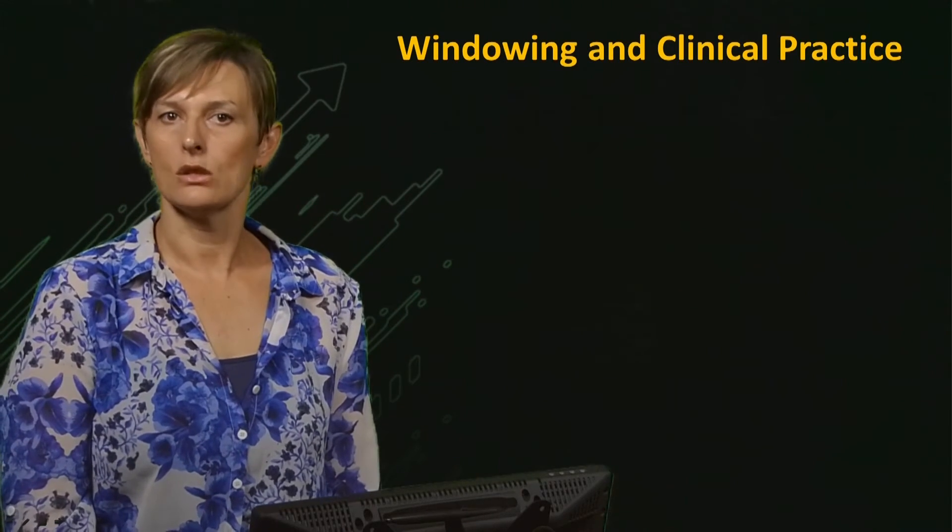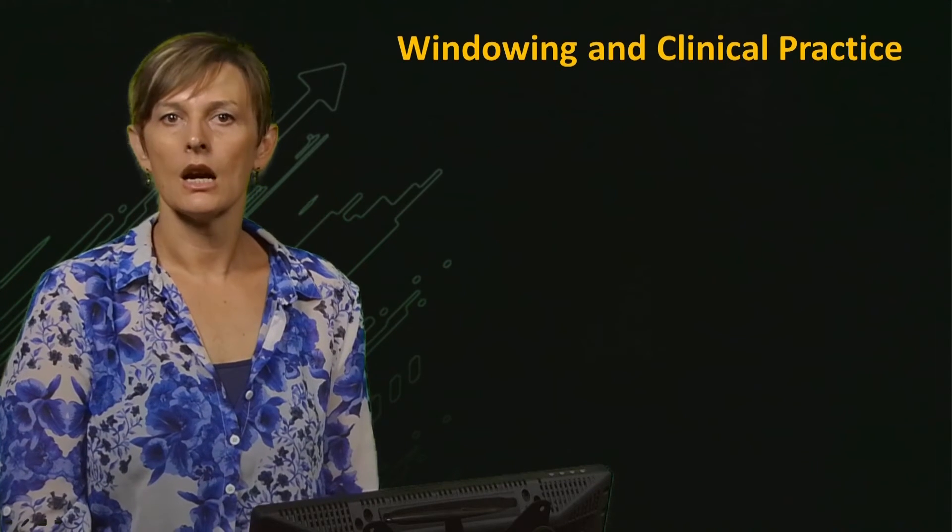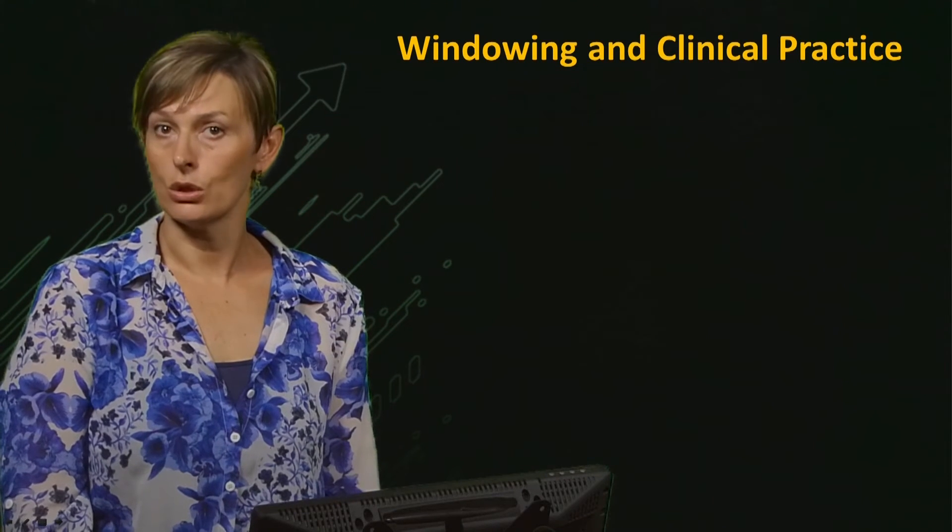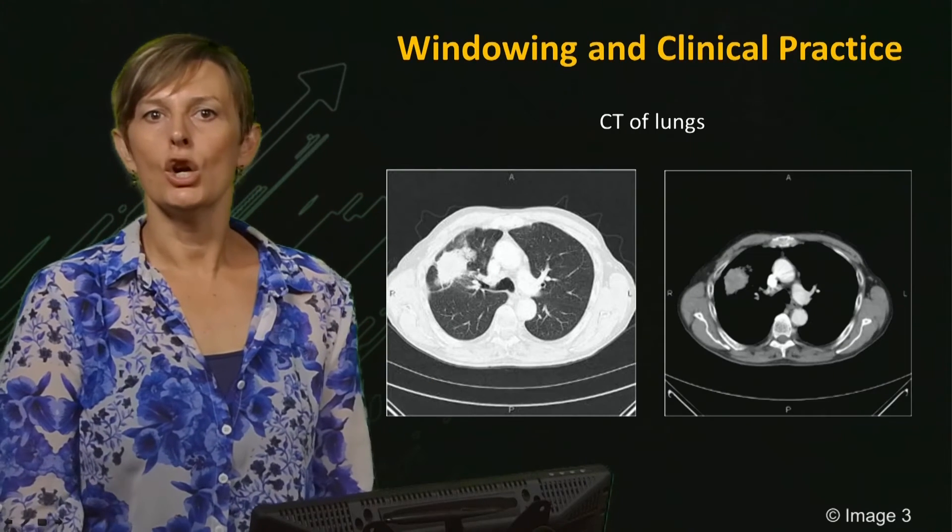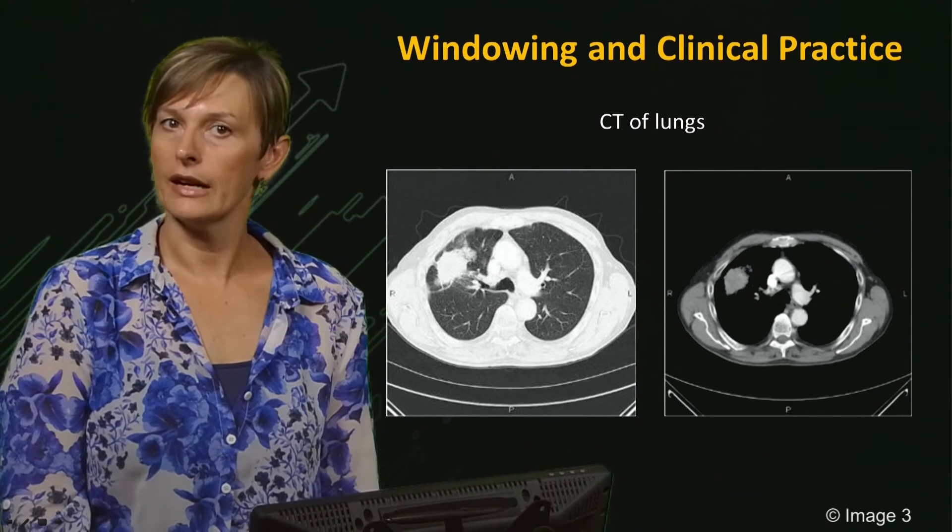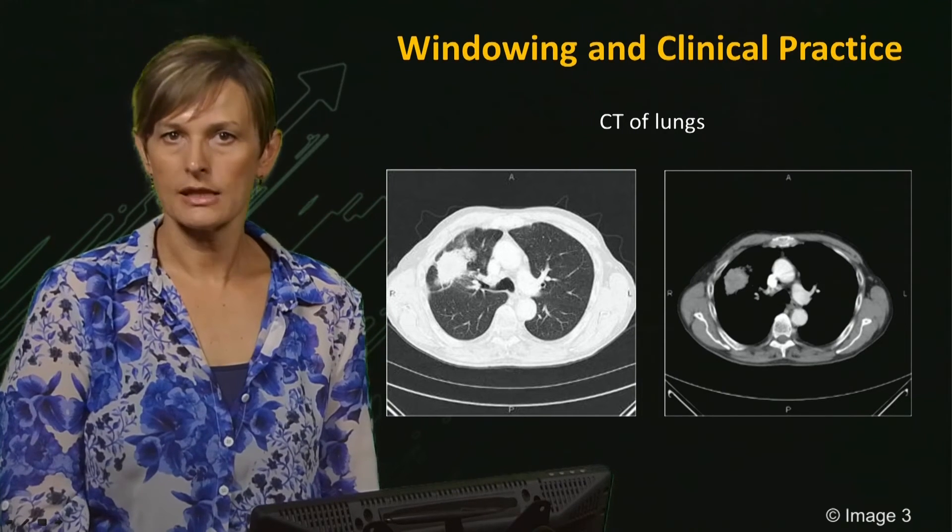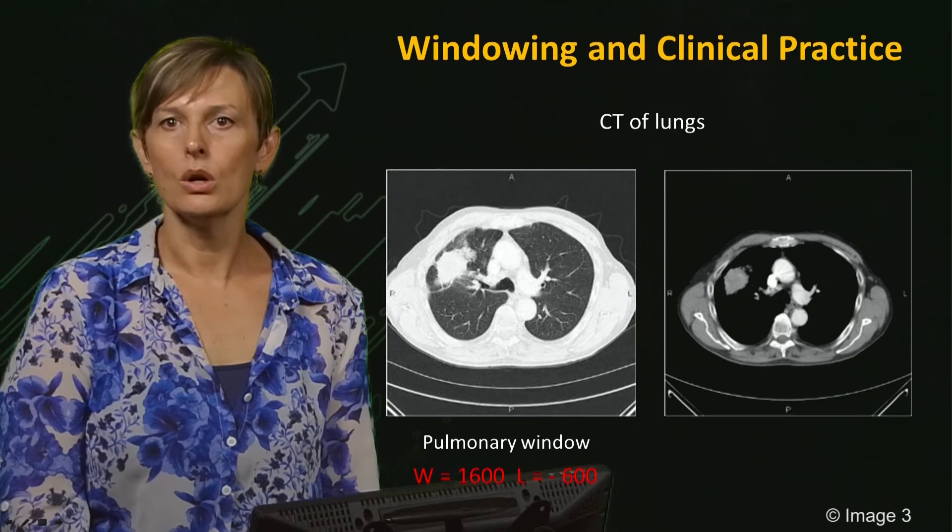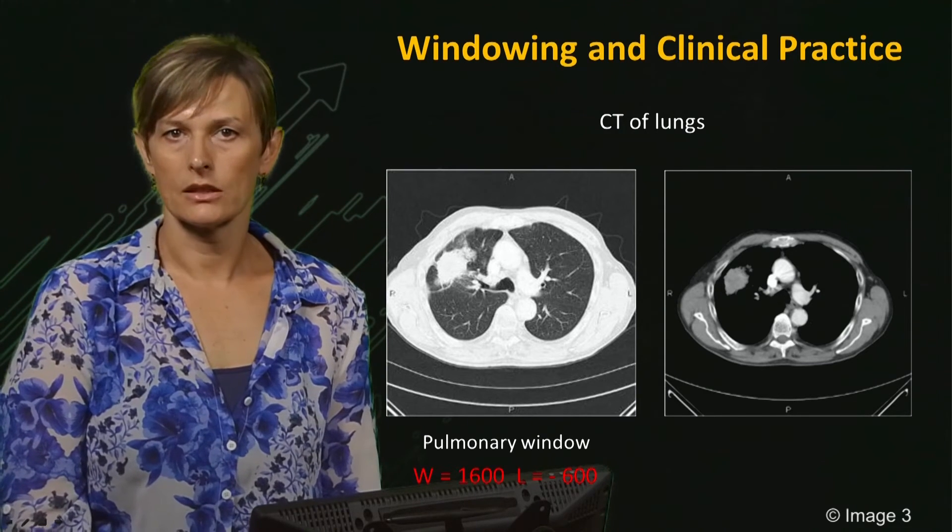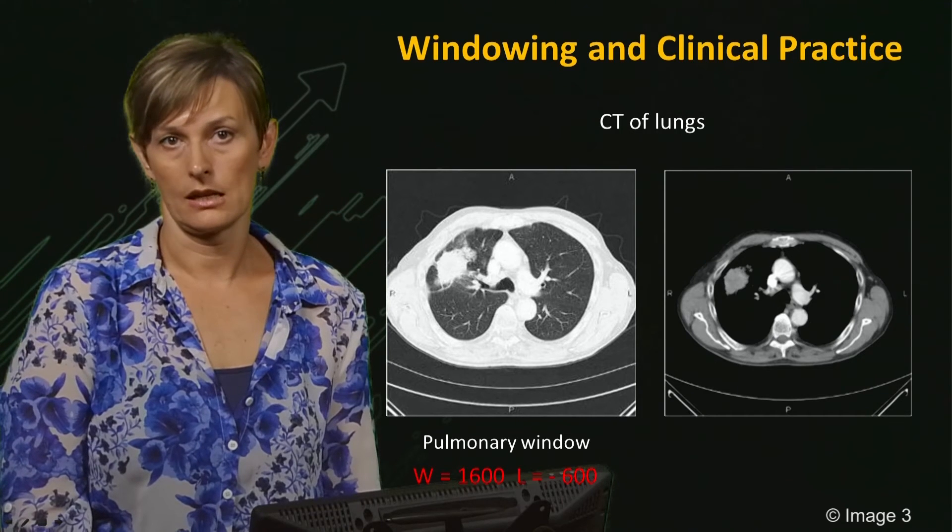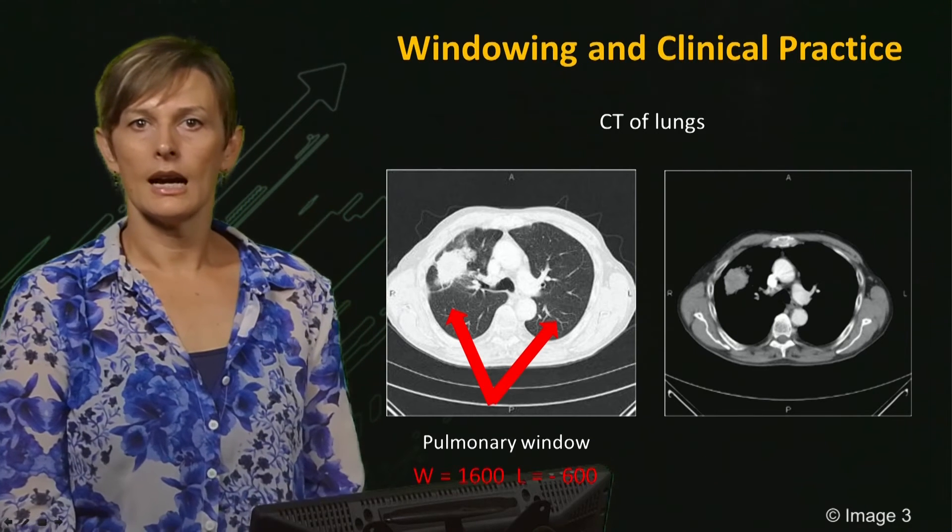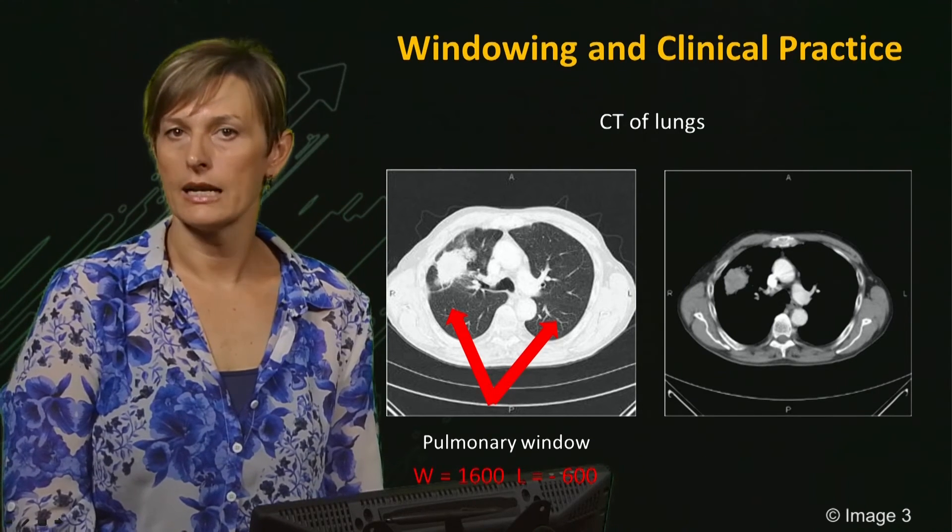The main reason windowing is used is to improve contrast sensitivity. The window can be set to display very small differences in tissue densities. For example, during lung imaging, the same image here is viewed with different value of window parameters. The first image on the left was taken with the pulmonary window. W was set to 1600 and L set to minus 600. You will note that the lungs can be clearly seen, as well as the dense area in the right upper lung.